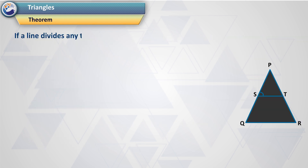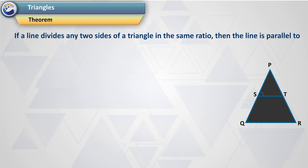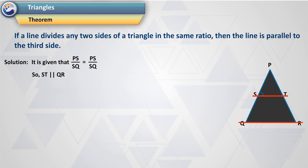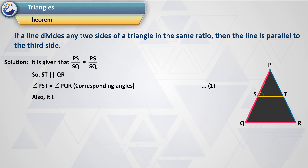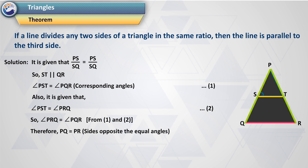If a line divides any two sides of a triangle in the same ratio, then the line is parallel to the third side. Solution: It is given that PS/SQ = PT/TR, so ST is parallel to QR. Therefore, angle PST equals angle PQR (corresponding angles) — equation 1. Also given that angle PST equals angle PQR — equation 2. So angle PRQ equals angle PQR from equations 1 and 2. Therefore, PQ equals PR (sides opposite equal angles), that is, triangle PQR is an isosceles triangle.